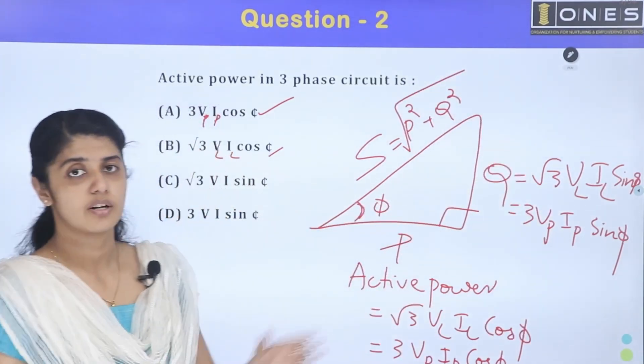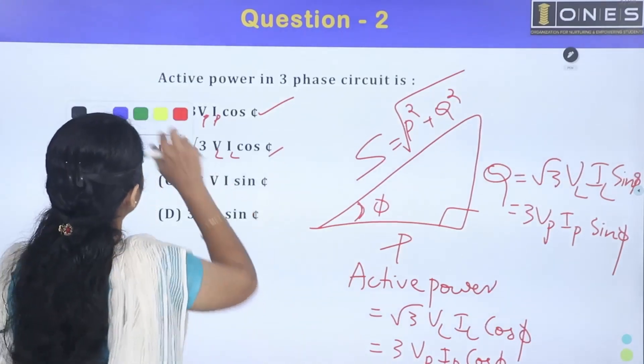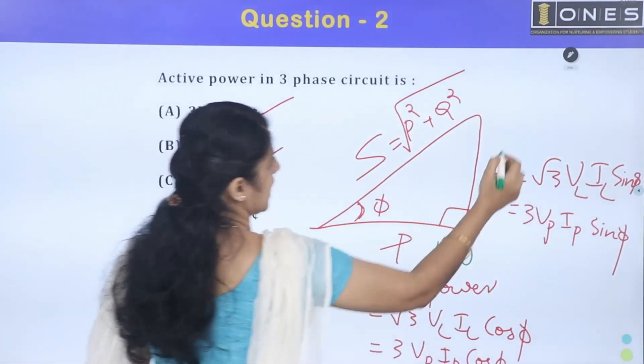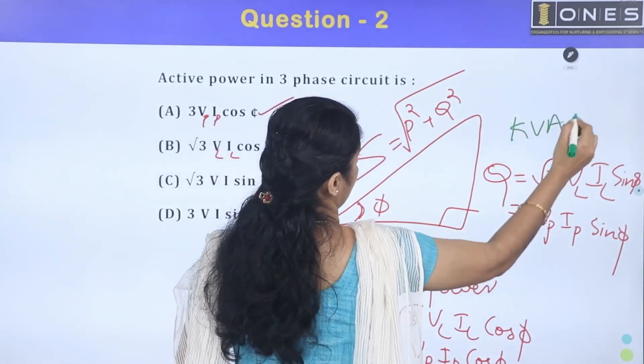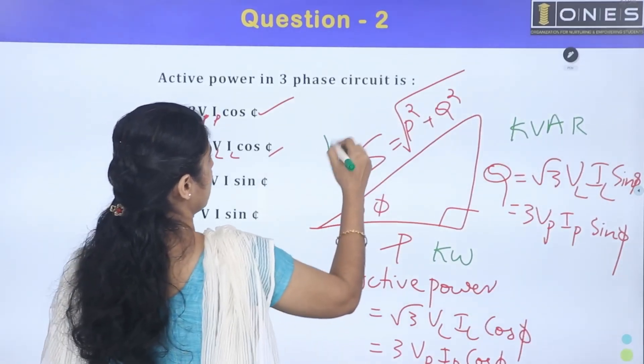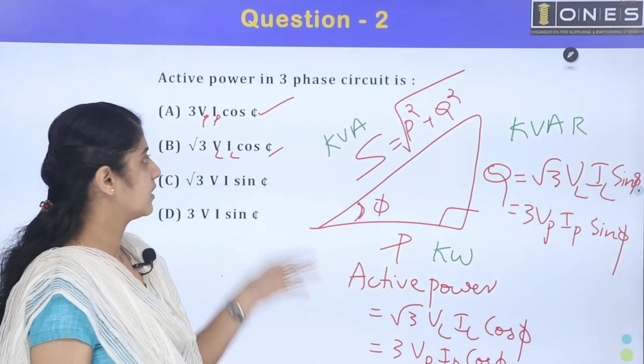Apparent power S equals root of P square plus Q square. Units are: active power unit is kilowatt, reactive power unit is kVAr, and apparent power is kVA.